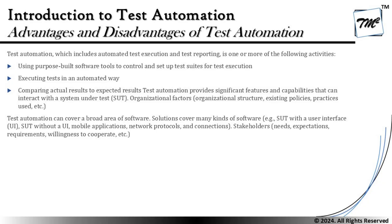Test automation can cover many broad areas. Solutions cover many kinds of software — be it a system under test with a UI, mobile application, or network protocols. Stakeholders' needs, expectations, requirements, and willingness to cooperate all add to the consideration. It is not as simple as hearing about an automation tool and immediately using it. You need to understand how your budget and schedule support it, and whether the business understands the need, because some tools are expensive commercial products.